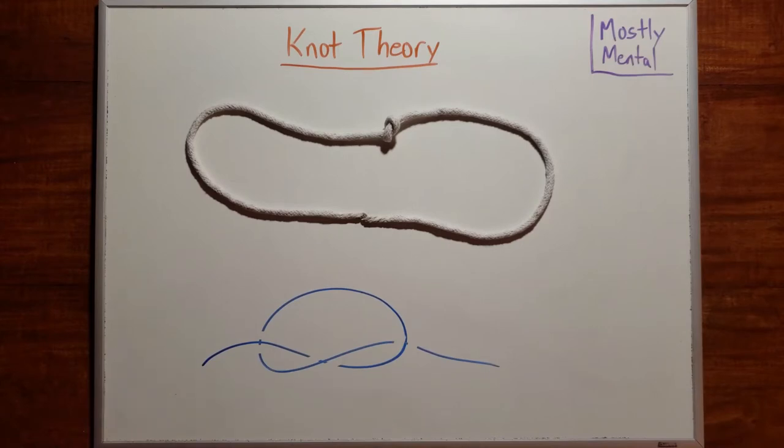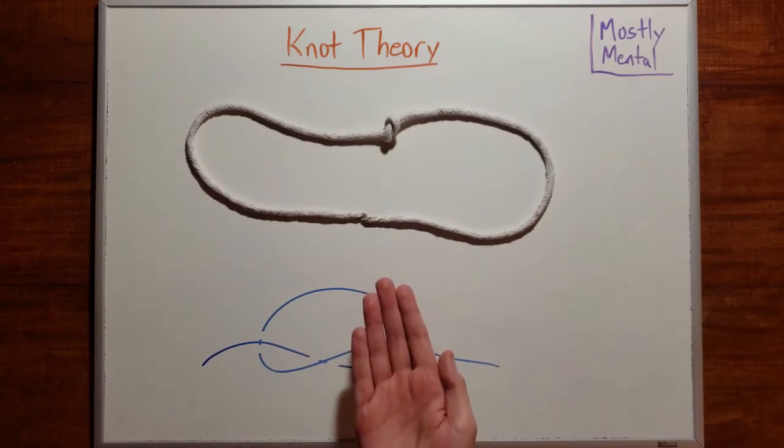So a knot is just a thin, stretchy, closed loop that might or might not have some twists in it. If you prefer a formal topological definition, it's the continuous injective image of a circle into 3D space, or really the equivalence class of such images under ambient isotopy. But the informal definition will be just fine for our purposes. It's a string with the ends stuck together.